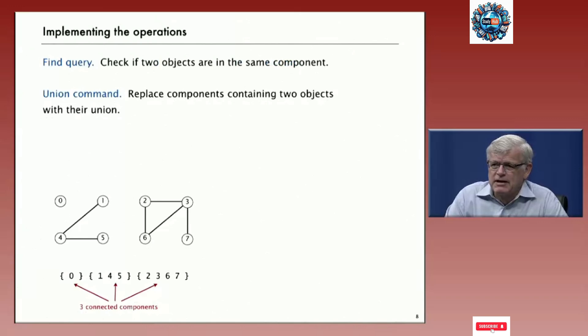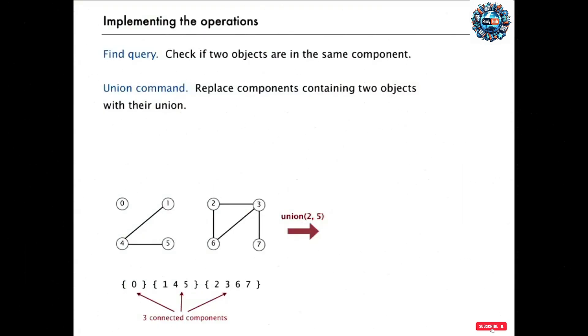To implement the operations, we have the find query and the union command. We're going to maintain the connected components. The find is going to have to check if two objects are in the same component. And the union command is going to have to replace components containing two objects with their union. So, for example, if we have these components and we get the command to connect two and five, essentially we need to merge the connected components containing the one containing two with the one containing five to get a big connected component. So, now we have only two connected components.